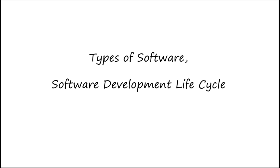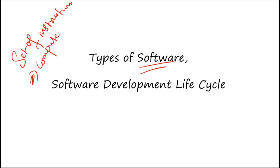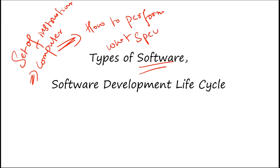Today we are covering types of software and software development lifecycle. Before moving ahead, a quick recap: software is a simple set of instructions provided to a computer or electronic device, telling it how to perform specific tasks. We also covered characteristics of good software, how applications differ from software, and the three major mobile app types: native, hybrid, and web app.